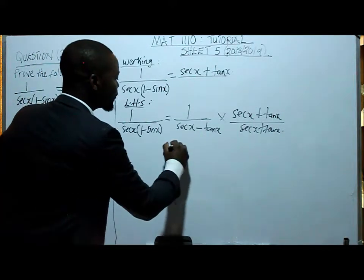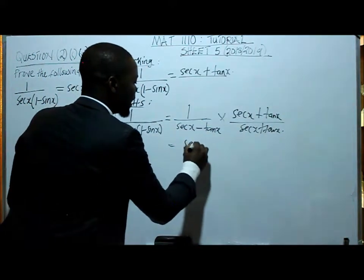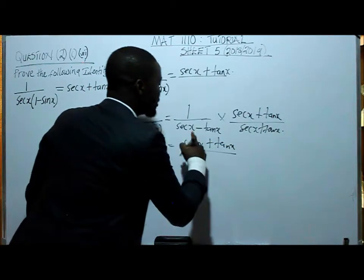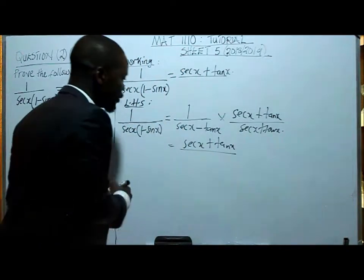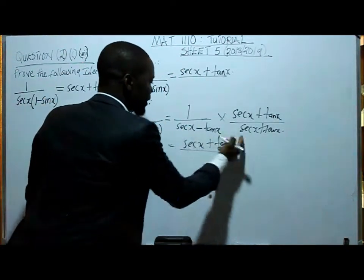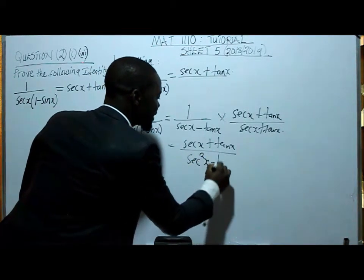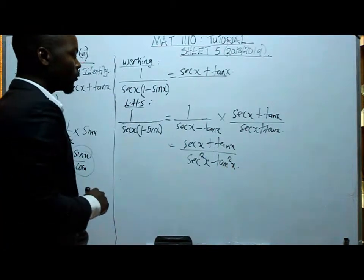So from here, we say one times this part is sec x plus tan x. These two, it's a difference of two squares, as we discussed in the previous video. So we have got sec squared x minus tan squared x.